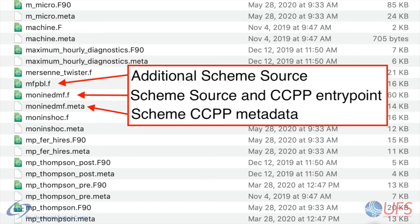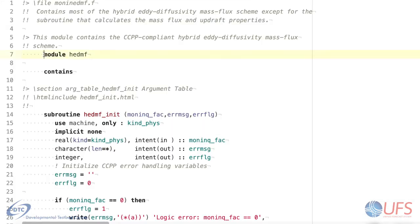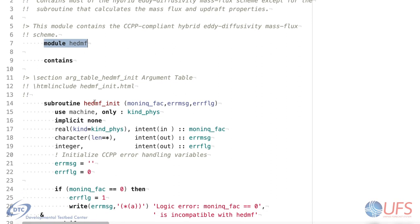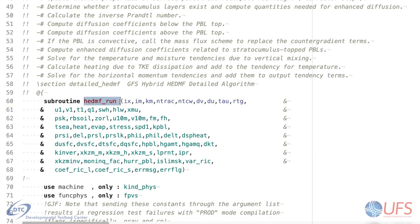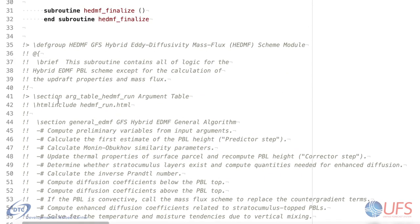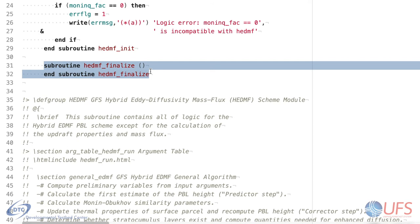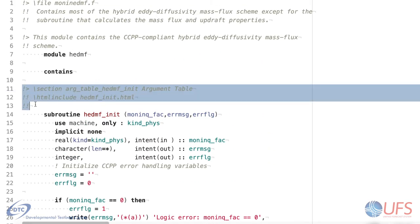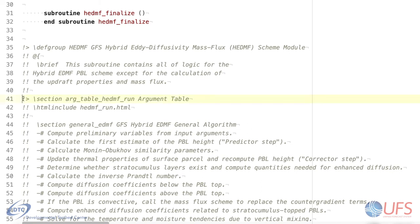As a real-world example, consider the so-called hybrid EDMF planetary boundary layer scheme. Its CCPP compliant entry point is in the file moninedmf.f, but some of its code exists in a separate file, mfpbl.f, that is callable from the entry point scheme. Notice that the entire scheme is placed in the HEDMF module, and that it contains specially named subroutines called HEDMF_init, HEDMF_run, and HEDMF_finalize. Since the finalize subroutine is not needed for this scheme, it's empty. Lastly, notice that both non-empty subroutines have the special comment lines for connecting them to their metadata.